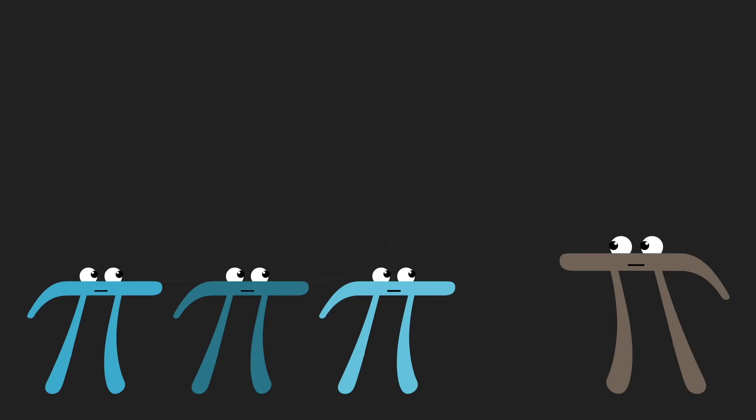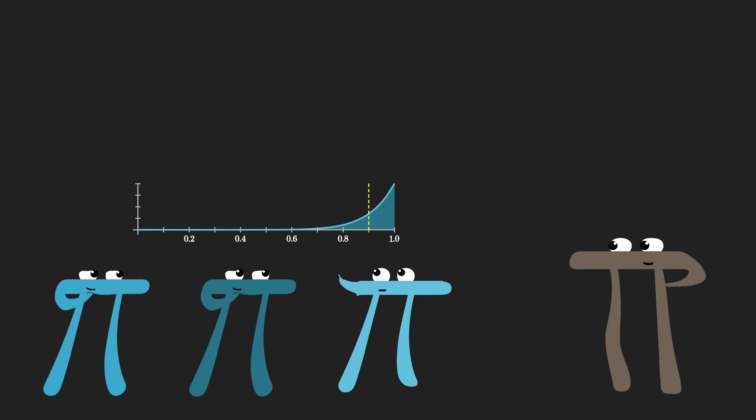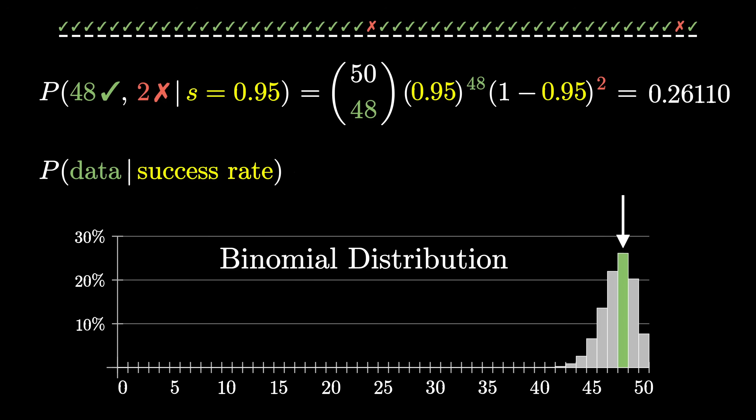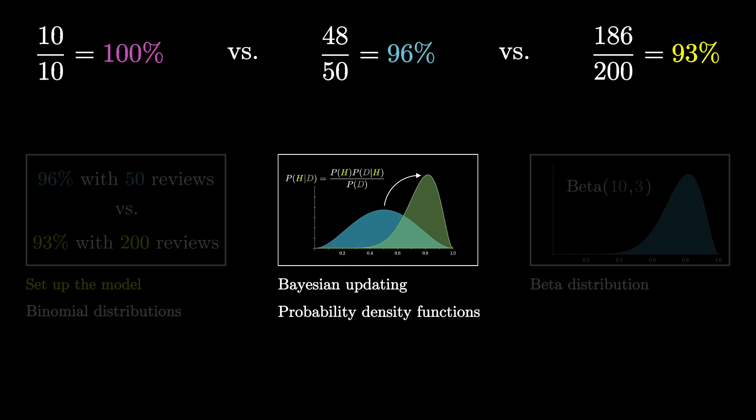Maybe you think that instead, we should look for some kind of center of mass of this graph, and that would absolutely be on the right track. First though, we need to explain how to take this expression for the probability of the data we're seeing, given a value of s, and get the probability for a value of s, the thing we actually don't know, given the data, the thing we actually know. And that requires us to talk about Bayes' rule, and also probability density functions. For those, I'll see you in part 2.